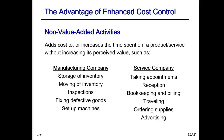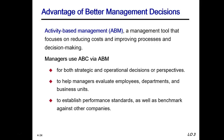Non-value-added costs in manufacturing include storage of inventory, moving it, inspections, fixing defective goods, and setups. With service companies, activities that don't add value include appointments, reception, bookkeeping, traveling, ordering, and advertising. Ultimately, ABC provides a better avenue for managers to make decisions, and activity-based management is the way managers use ABC to make better decisions through this process.